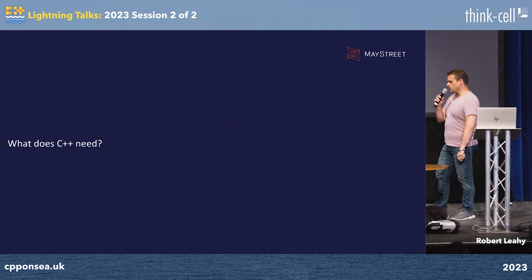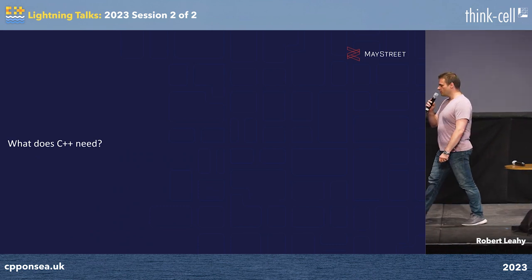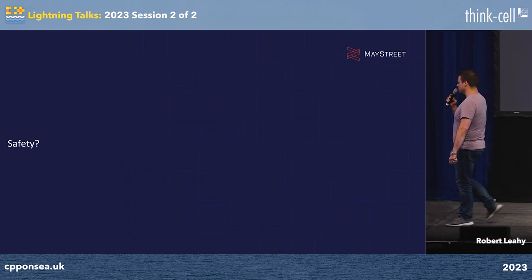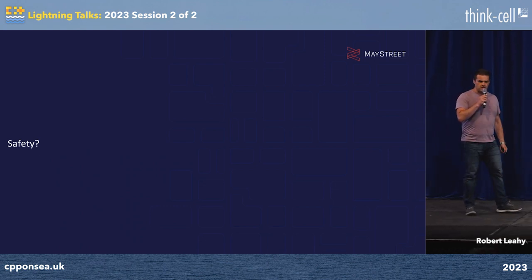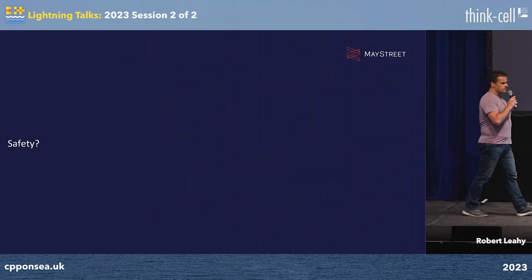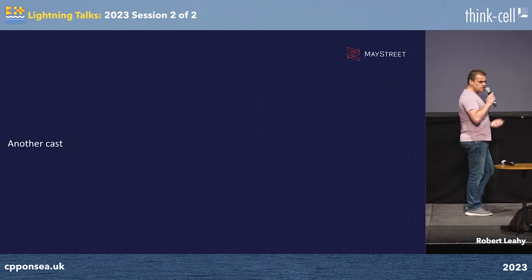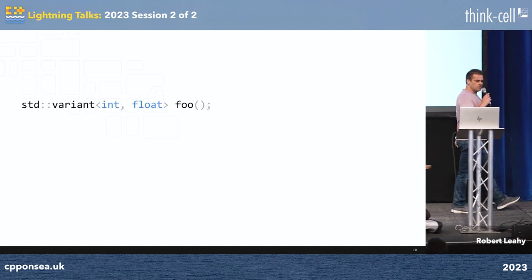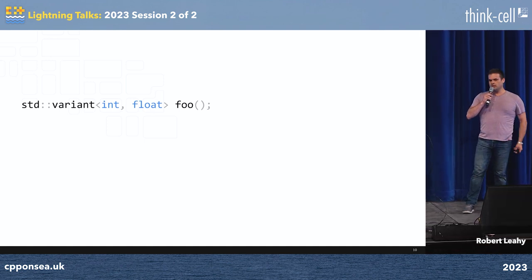I'm going to start my talk with a question: what does C++ need? Some people this week seem to think it's safety. But I'm here to say that maybe we should just stick to what we're good at. Maybe what we need is another cast. Because what happens if you find yourself in this situation? You have a function, it returns a variant,